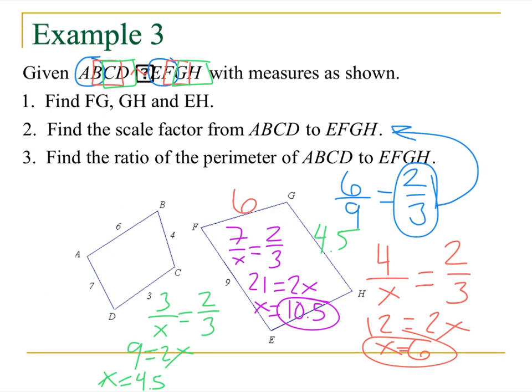Now, I want to find the ratio of the perimeter. Well, how do I find perimeter? If I found perimeter, I just have to add up all my sides. So, for the ABCD, six plus four is 10. Seven plus three is 10. So, 20 for my perimeter over here. So, I got 20 for my perimeter.